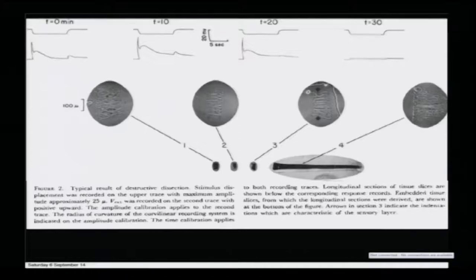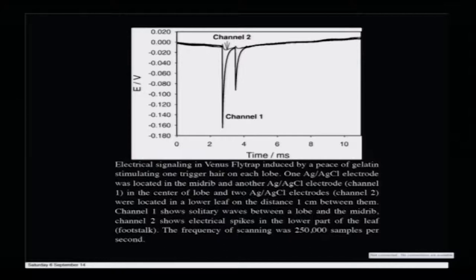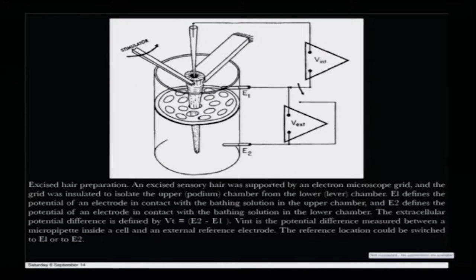More interesting is the electrical signaling in venus flytrap induced by a piece of gelatin. Gelatin acts as the stimulus triggering one hair on each lobe. One Ag/AgCl electrode is located in the midrib and another Ag/AgCl electrode in the center of the lobe. Channel one shows a solitary wave between the lobe and the midrib, and channel two shows the electrical spike in the lower part of the leaf.